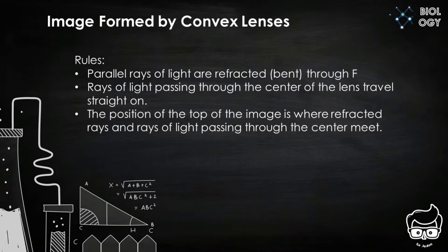Now let's talk about image formed by convex lenses. We have some rules to follow. Number one, parallel rays of light are refracted or bent through the F point. Number two, rays of light passing through the center of the lens travel straight on. Number three, the position of the top of the image is where refracted rays and rays of light passing through the center meet.